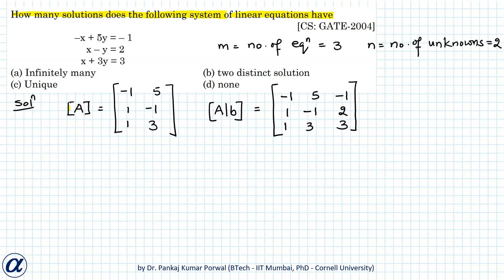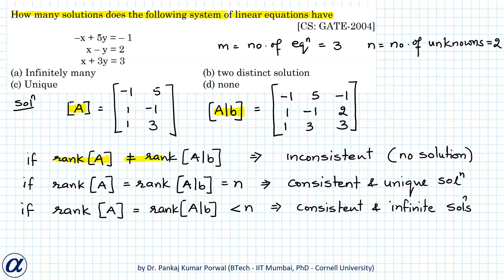Depending on the ranks of matrix A and the augmented matrix, we can have three situations. If rank of A is not equal to rank of the augmented matrix, the system is inconsistent and has no solutions. If rank of A equals rank of the augmented matrix and both equal n (number of unknowns), the system is consistent and has a unique solution.